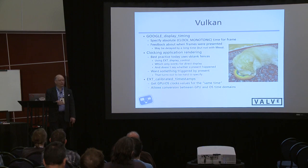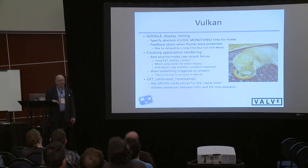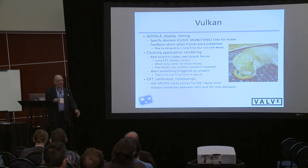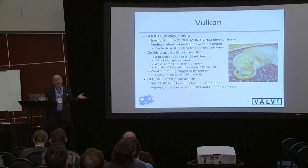In a desktop environment, where we're less worried about power consumption, we're more willing to take the context switch necessary to get that information back to the application quickly. In my implementation of Google Display Timing on Mesa, you actually get the information very soon after V-blank — probably within less than a millisecond of the actual V-blank. However, you don't know when the data is going to be available because the API provides no way to figure that out, so if you ask too early you won't get the result for the previous frame.